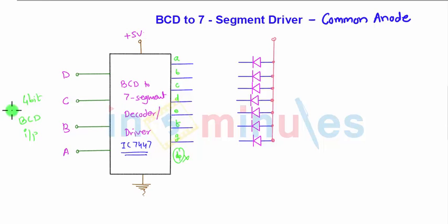So these are the LEDs emitting lights and anode part is shorted to a single point and this point will be connected to plus 5 volts. That is nothing but Vcc plus 5 volts supply. So this configuration here is nothing but the common anode type.